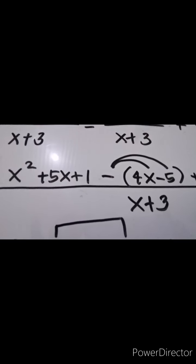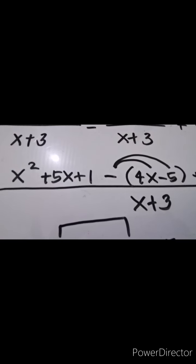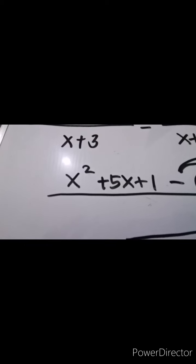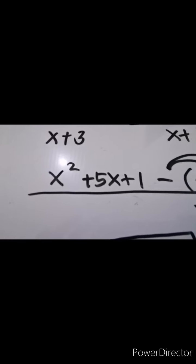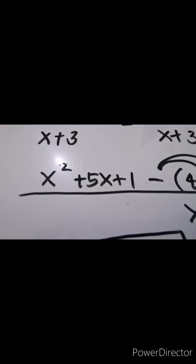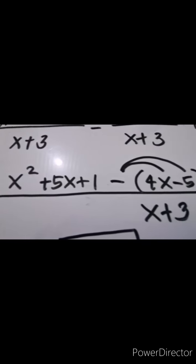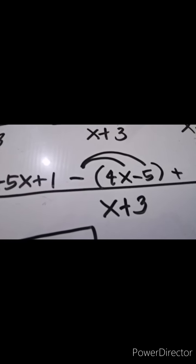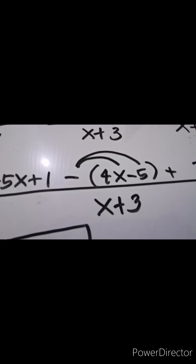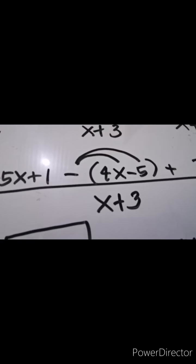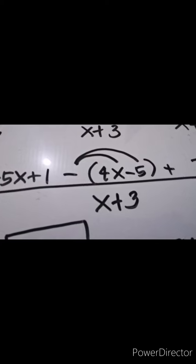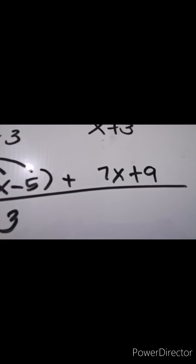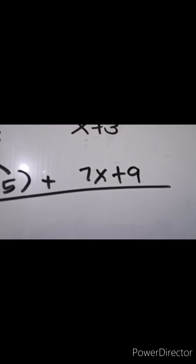Copy the denominator: x plus 3. Then copy x squared plus 5x plus 1, minus (4x minus 5) — it's in parentheses because it's subtraction — then plus 7x plus 9.